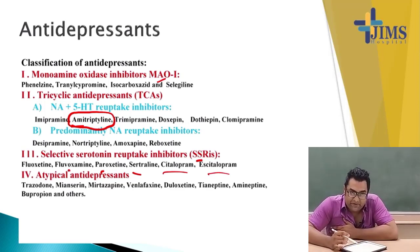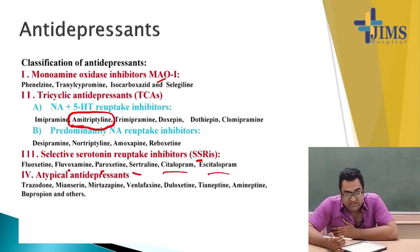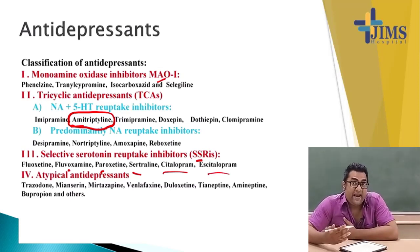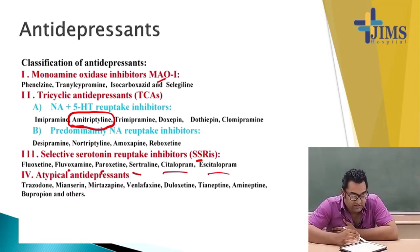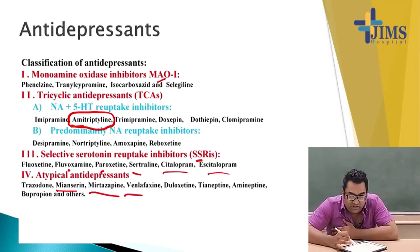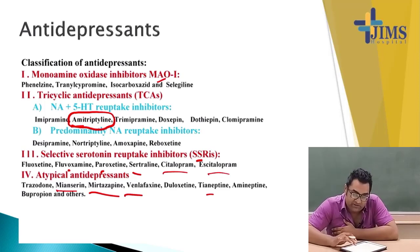Atypical antidepressants, or SNRIs and NRIs, which are recently found noradrenaline reuptake inhibitors or all three reuptake inhibitors, include trazodone, mianserin, mirtazapine, venlafaxine, duloxetine, tianeptine, amineptine, bupropion, and others.